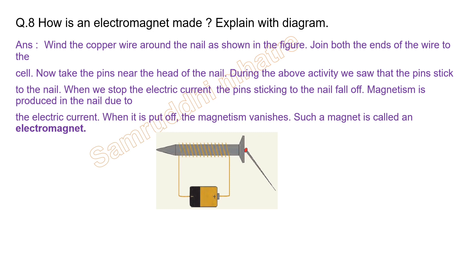Eighth question: how is an electromagnet made? Explain with a diagram. Wind the copper wire around the nail as shown in the figure. Join both ends of the wire to a cell. Take a pin near the head of the nail — the pins stick to the nail. When we stop the electric current, the pins fall off. Magnetism is produced in the nail due to electric current, and when the current is switched off, the magnetism vanishes. Such a magnet is called an electromagnet.